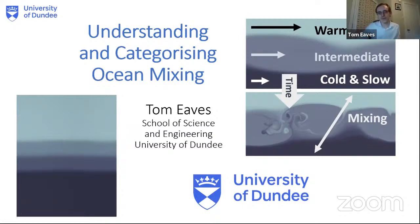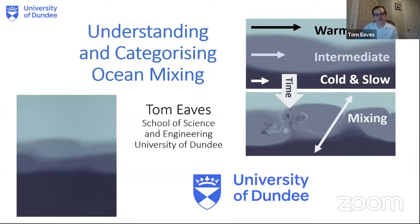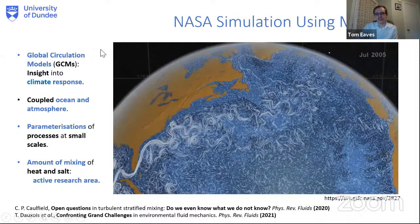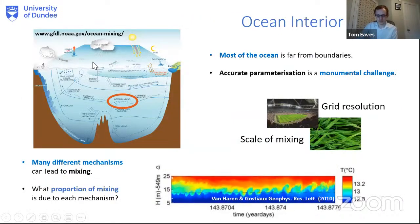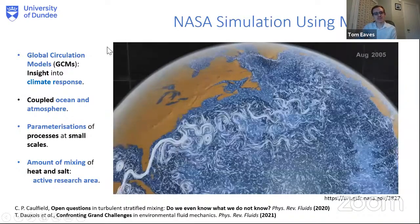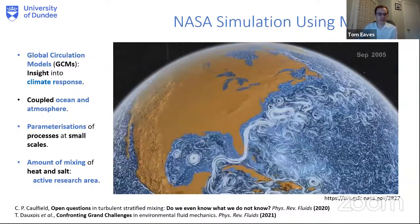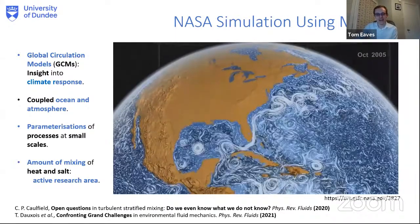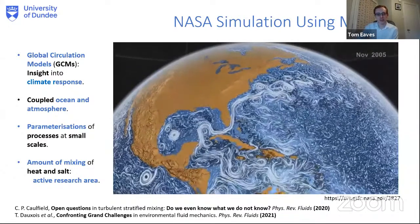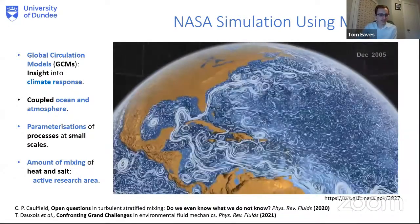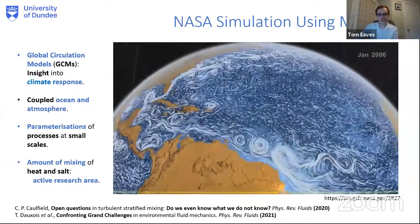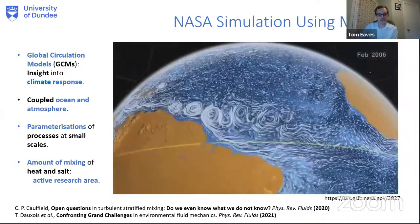What I want to talk about today is some of the ways in which mixing occurs in the ocean, and some of the new techniques we're using to try and understand various aspects of that mixing. So why are we interested in thinking about mixing in the ocean? One of the grand challenges we have at the moment is to understand the Earth's climate system as well as we possibly can. One of those factors, which is often overlooked in popular science but is very crucial to the whole balance, is mixing in the ocean.